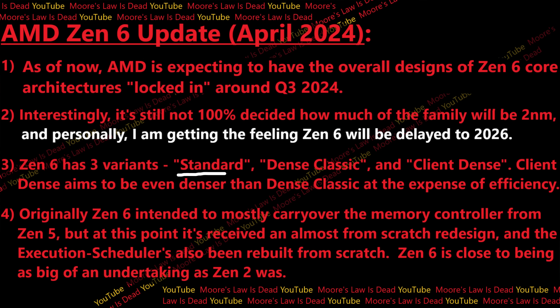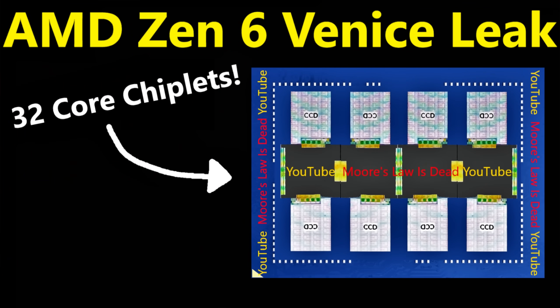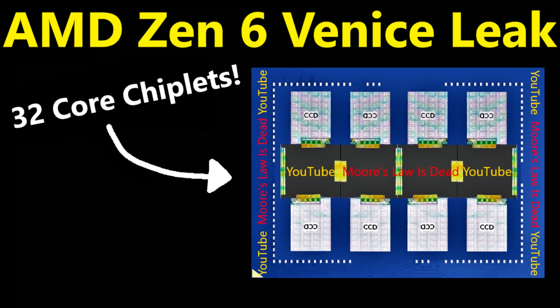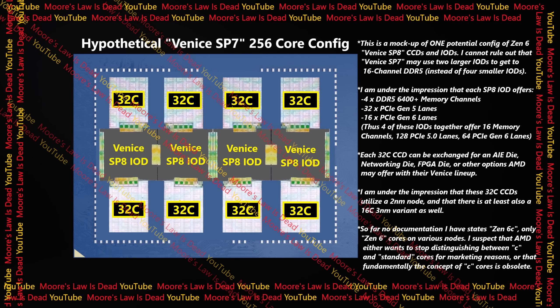Zen 6 has three variants: standard, dense classic, and client dense. Standard Zen 6 is like standard Zen 5 and Zen 4 — the generally highest-clocking, most vanilla version that doesn't have the highest core counts. Dense classic is the successor to what we call 4C/5C cloud cores — it saves on die space per core, clocks lower, but is really efficient, so you get more cores per CCD with extra efficiency in those cores, taking up less space.